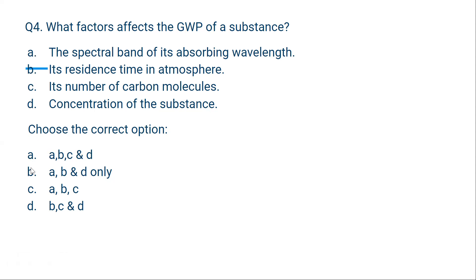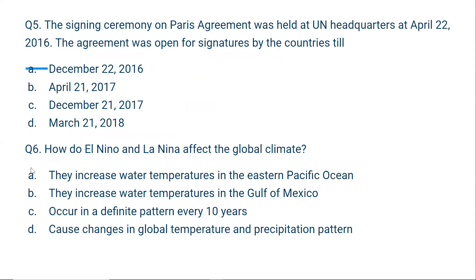Question number five: The signing ceremony of the Paris Agreement was held at the UN headquarters on April 22, 2016. The agreement was open for signatures by countries until April 21, 2017 — for one year, countries could decide and sign. The correct option is B.